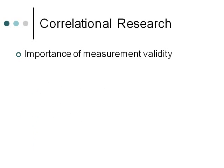With correlational research, we have some limitations in terms of what we can conclude. We can't infer causality because it's not an experiment. Because we're not assigning people to groups and not doing things to people, the importance of measurement validity really increases. This is where you can exert some control and skill in designing a study to make sure you're measuring what you say you're measuring, because what you can conclude about a relationship between variables hinges almost entirely on how you measure those variables.